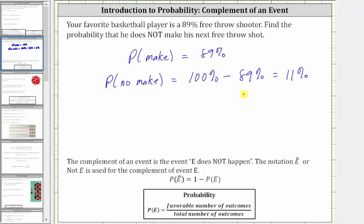Which we used here to find the probability he will not make the next free throw, where one as a percent is 100%. I hope you found this helpful.